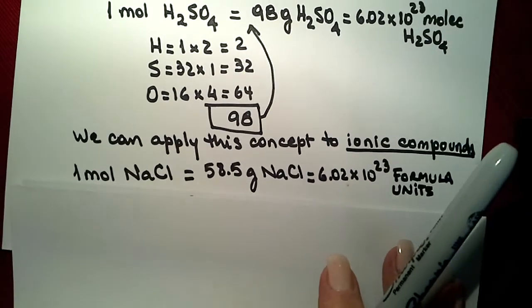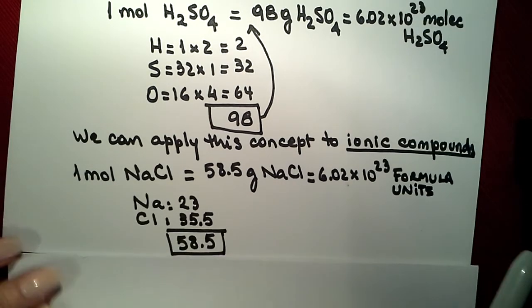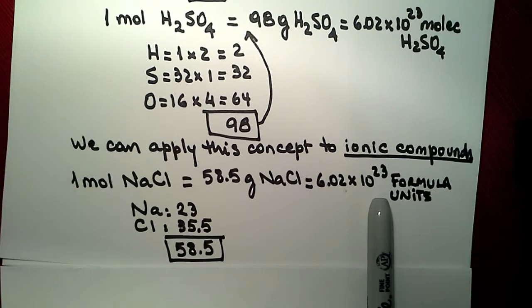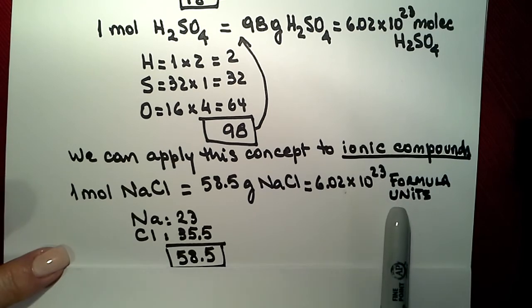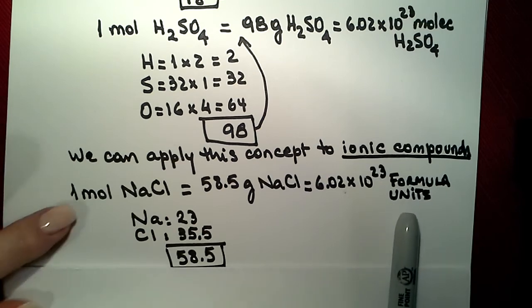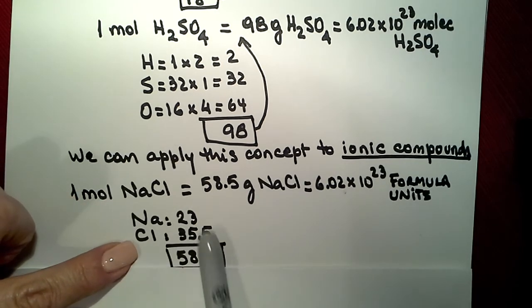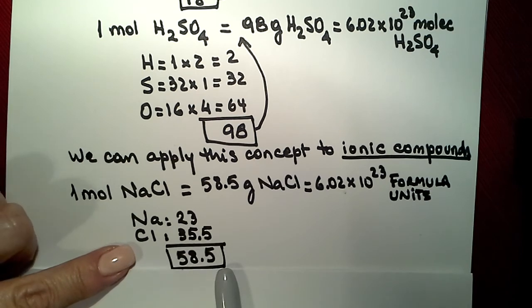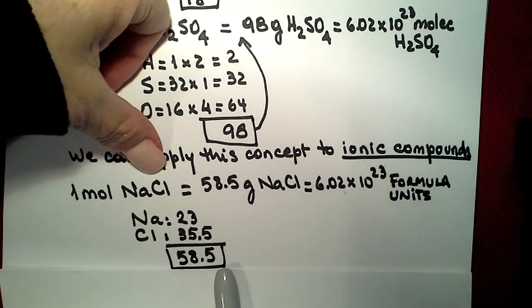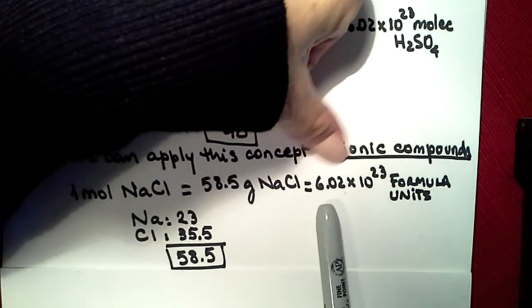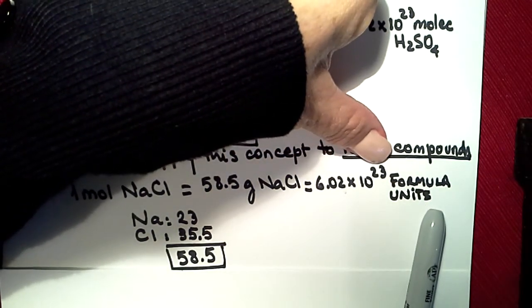Now, even if we have ionic compounds, we can expand that. We are not going to have one mole of molecules. We are going to have what we call formula units, which is the same concept as molecule, but it is not for covalent compounds. So, one mole of sodium chloride, in this case, sodium appears once, chlorine appears once, so we have 58.5 is the mass. So, one mole of sodium chloride is going to be 58.5 grams of sodium chloride. It is the same as 6.02 times 10 to the 23rd formula units, in this case.